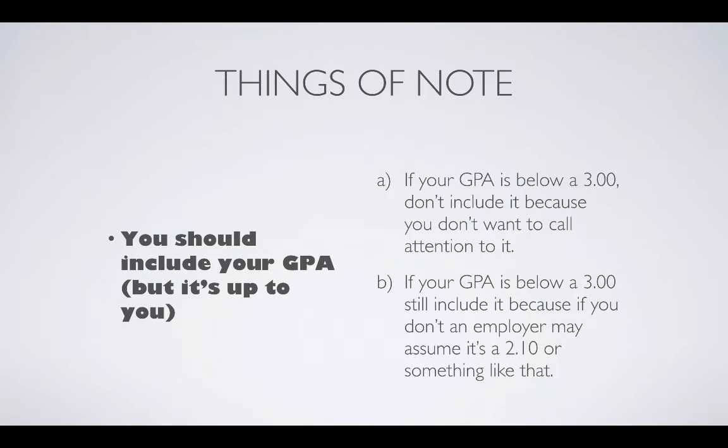You should include your GPA. It's really up to you. If your GPA is above a 3.0, there's no question, always include it. If it's below a 3.0, grades are really personal, it's up to you. There are two schools of thought. If your GPA is below 3.0 and you don't include it, you don't want to call attention to it. But if your GPA is below 3.0 and you do include it, you don't want the employer to assume it's like a 2.1. You run the risk when you don't include it that an employer might assume it's really low. If you have a 2.9 or 2.8, they might assume it's a 2.1. Sometimes I recommend if it's a 2.7, 2.8, 2.9, throw it on there. Anything lower, it's really your call. At the end of the day, that's your decision and what you're comfortable with.